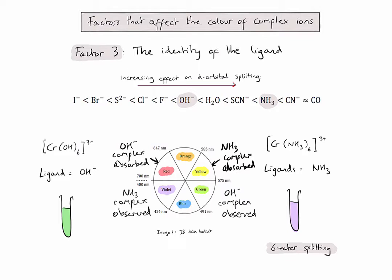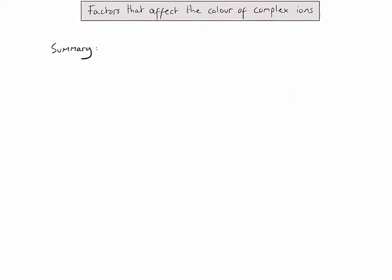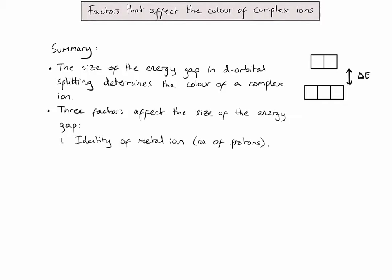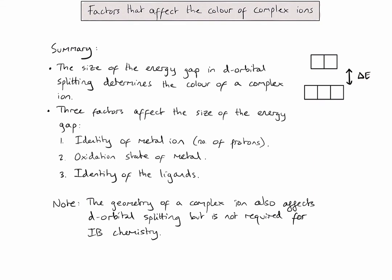Let's now summarise the key points. Firstly, the size of the energy gap in d-orbital splitting determines the colour of a complex ion. There are three factors that affect the size of this energy gap: the identity of the metal ion (effectively the number of protons in the nucleus), the oxidation state of the metal (the charge of the ion before it forms a complex ion with ligands), and the identity of the ligands themselves (which you can find in the spectrochemical series in the data booklet). It's also worth noting that the geometry of a complex ion can affect d-orbital splitting, but it's not required for IB chemistry.